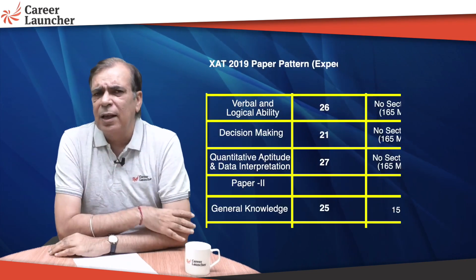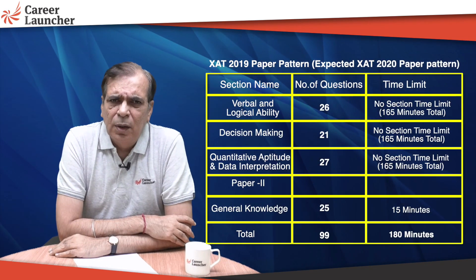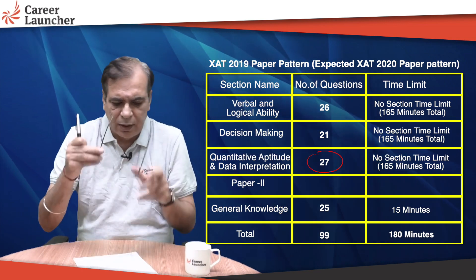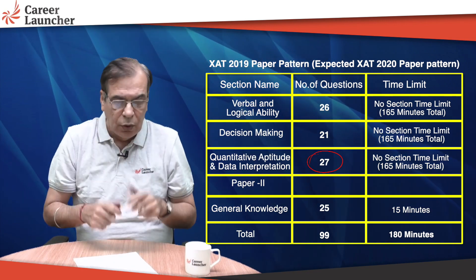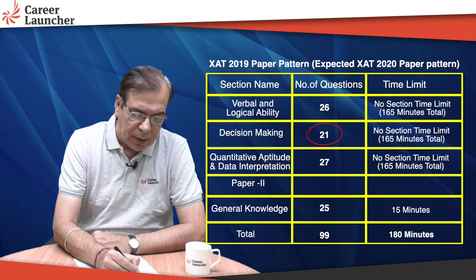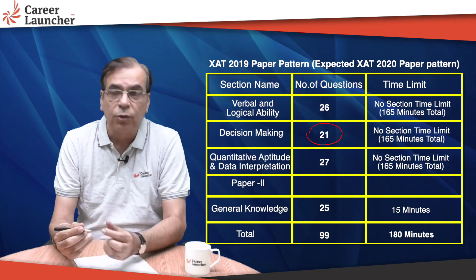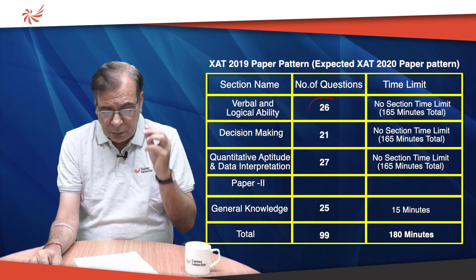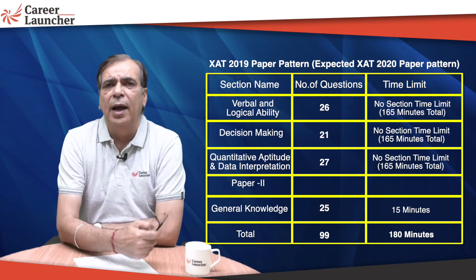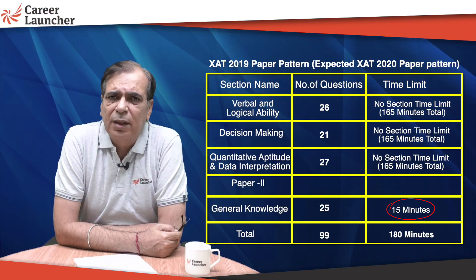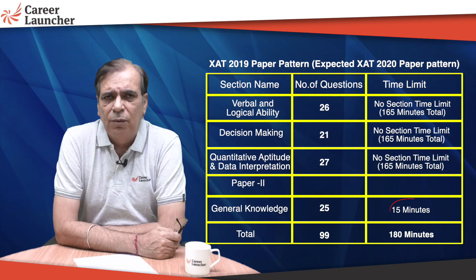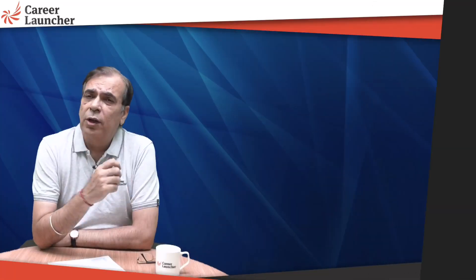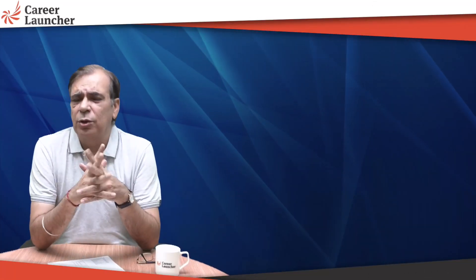Last year's paper had 27 questions in quant, 21 questions in decision-making, and 26 questions in verbal reasoning. The exam was 165 minutes, with 15 minutes given separately only for GK, which had 25 questions. Expect the same structure to continue.